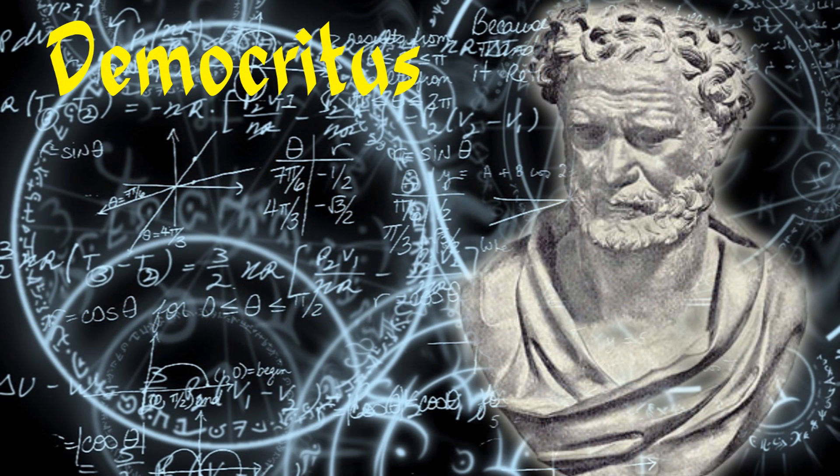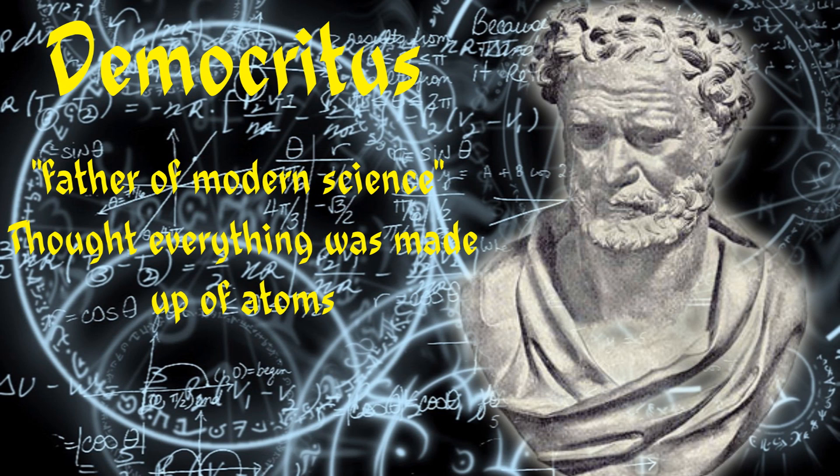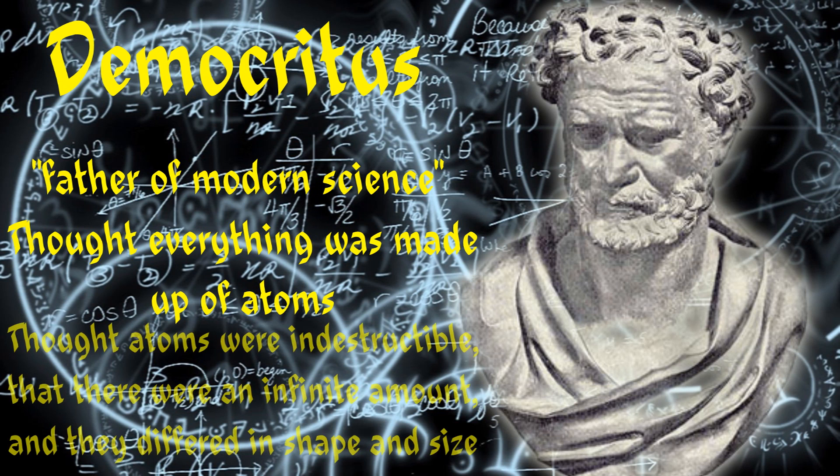Democritus was born around 360 BC and is often referred to as the father of modern science. This is because he had the crazy idea that everything is composed of atoms, which are physically, but not geometrically, indivisible. That between atoms, there lies empty space. That atoms are indestructible, have always been, and always will be.